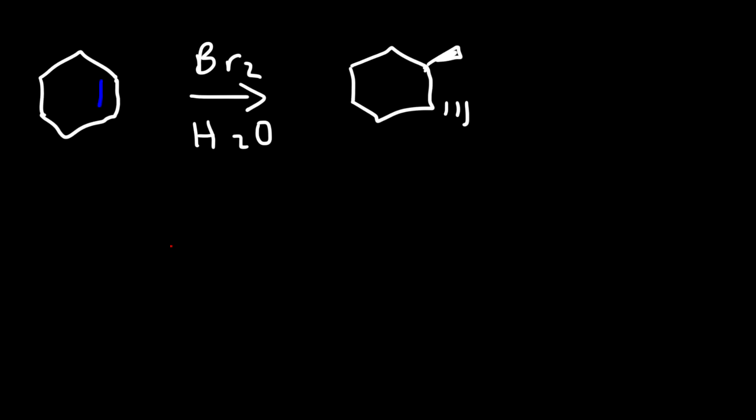Now there's another way in which we can accomplish the same transformation. So here's the other method. The first thing you want to do is take this particular molecule, cyclohexene, and react it with Br2 in water. So this will give you the halohydrin product. It's an anti-addition reaction. And you're going to get a bromine atom and an alcohol functional group on a chain.